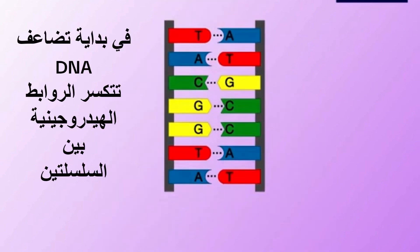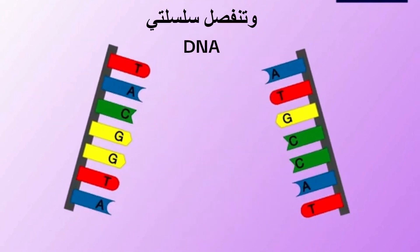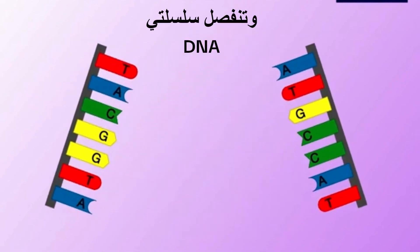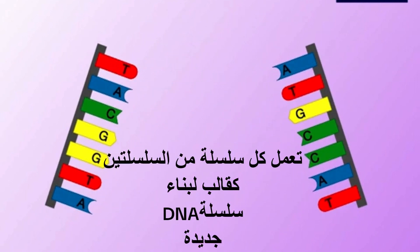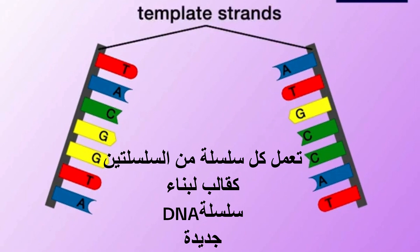At the beginning of DNA replication, the hydrogen bonds between the bases break, and the two DNA strands separate. Each DNA strand acts as a template for the synthesis of a new DNA strand.